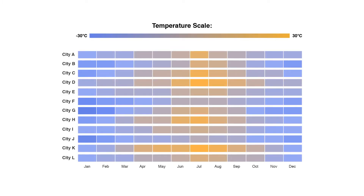Because of their reliance on color to communicate values, heatmaps are better suited for displaying a more generalized view of numerical data, as it's harder to accurately tell the differences between color shades and to extract specific data points, unless of course you include the raw data in the cells.